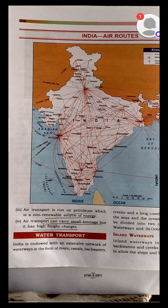At present, we had learnt that the railways are the largest and the busiest rail network of the world, and every day it is transporting over 18 million passengers and more than 2 million tons of freight daily.